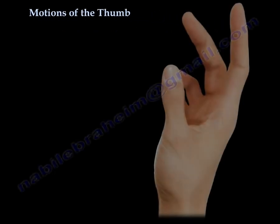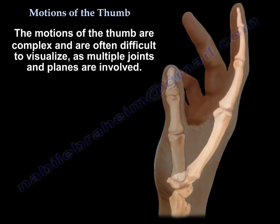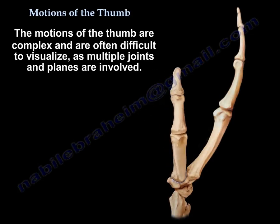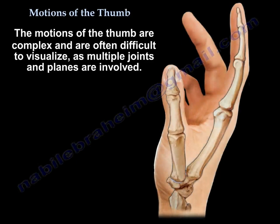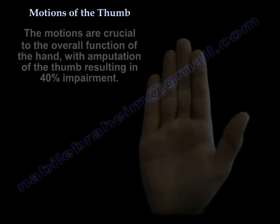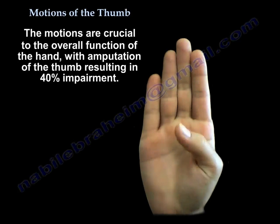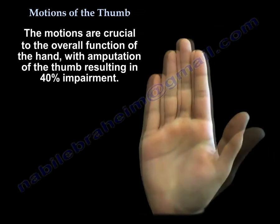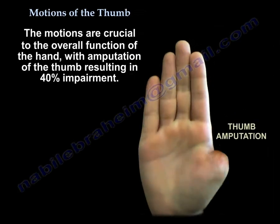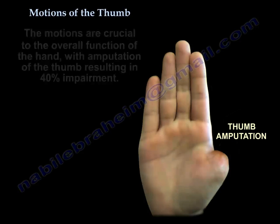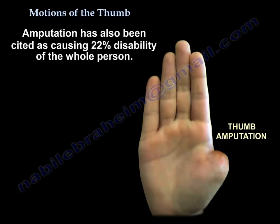The motions of the thumb are complex and are often difficult to visualize, as multiple joints and planes are involved. The motions are crucial to the overall function of the hand, with amputation of the thumb resulting in 40% impairment. Amputation has also been cited as causing 22% disability of the whole person.